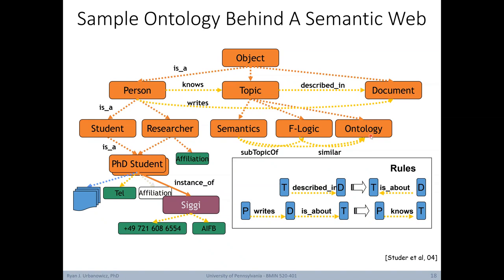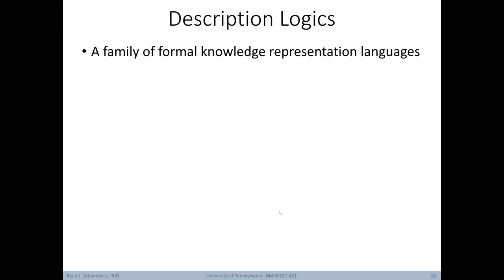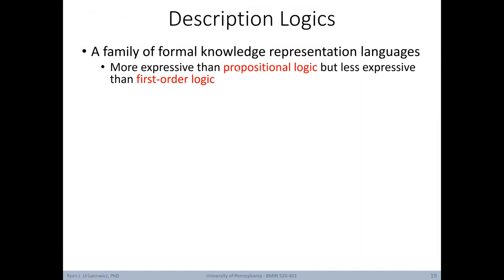This example illustrates how we can use an ontology with relationships to create a semantic web linking resources on the web, and through a formally set-up ontology with predefined inference rules, automatically make conclusions about resources on the web. This can help us find information more easily and with higher precision. The major paradigms for inference in a semantic web come from logic programming and description logic, relying on standards such as RDF and OWL. Description logics are a family of formal knowledge representation languages — more expressive than propositional logic, but less expressive than first-order logic. They can model concepts, roles, and individuals, as well as their relationships.